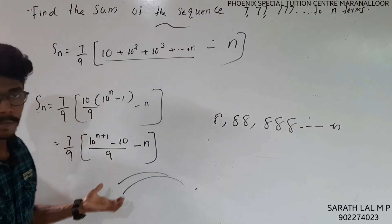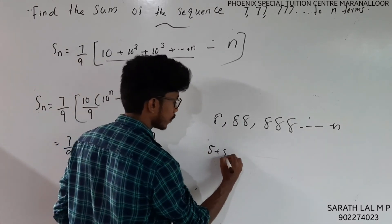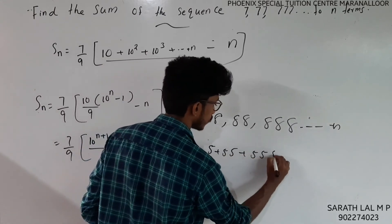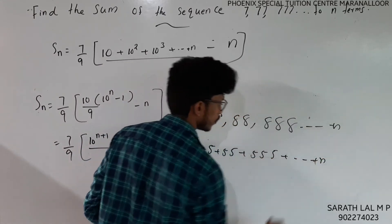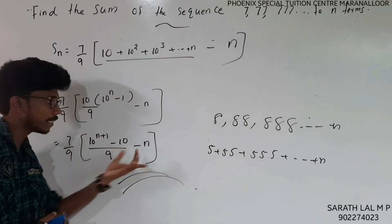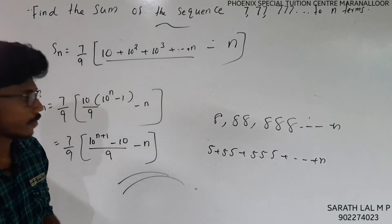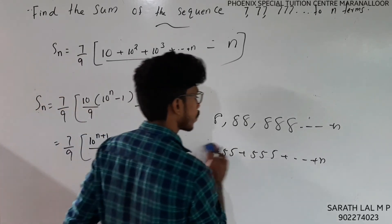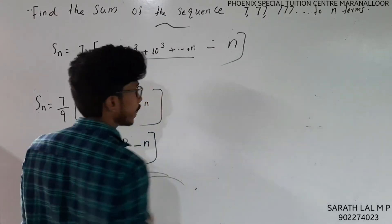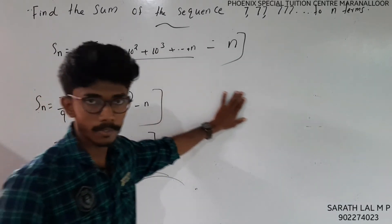This is a type of problem where we have series like 5 plus 55 plus 555, or other repeated digit patterns. This type of problem in GP is very important. You may be asked to find the sum of two such problems together.